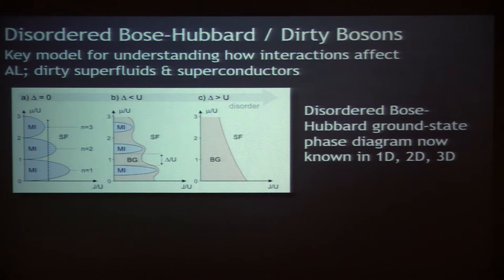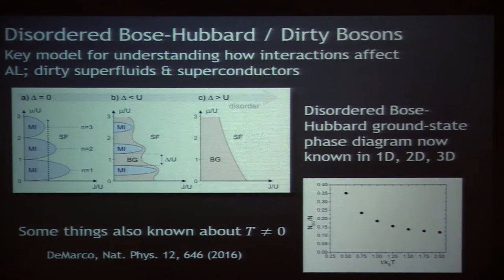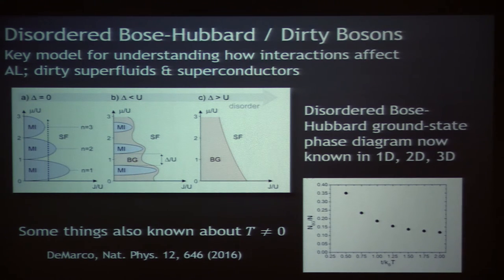The qualitative features of this phase diagram are known. In 2D and 1D we know quantitatively; in 3D we know something but not for a very wide range of chemical potentials. We actually know now from work by several of David's students that the Bose-glass phase actually persists up to non-zero temperature — so it's not just a zero temperature phenomenon. In 3D, this picture has not changed qualitatively for low but non-zero temperature.